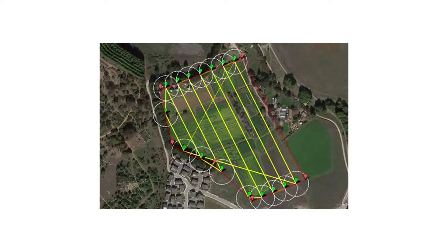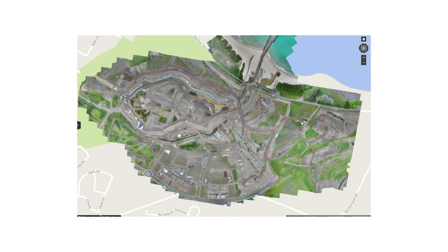Components of the AUVSI SUAS drone competition, which our club participates in, involve live image and/or video streaming. There is an autonomous object detection task, which involves surveying a marked area and detecting ground objects, and a mapping task, which involves surveying a designated area to generate a WGS84 Mercator map. Both of these tasks required us to transmit high-resolution images throughout the limited competition mission time.